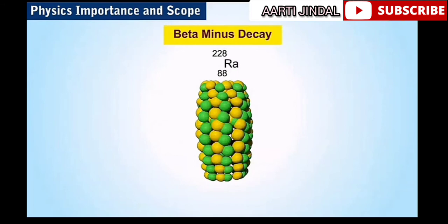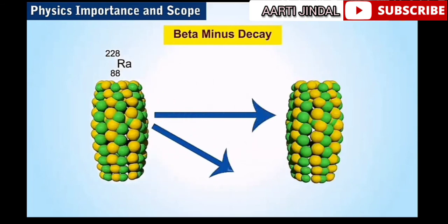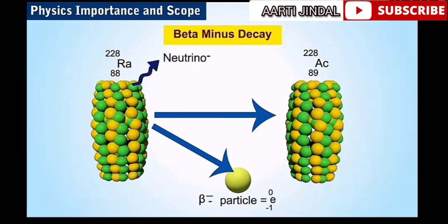Weak nuclear force comes into existence in case of beta decay of nucleus. In beta decay, the nucleus emits an electron and an uncharged particle called neutrino.